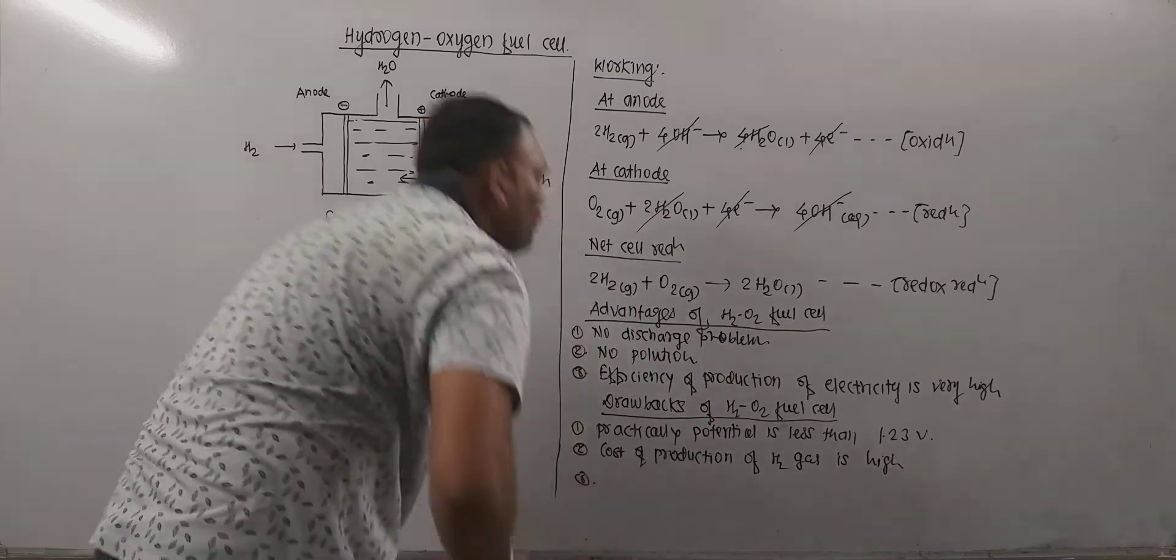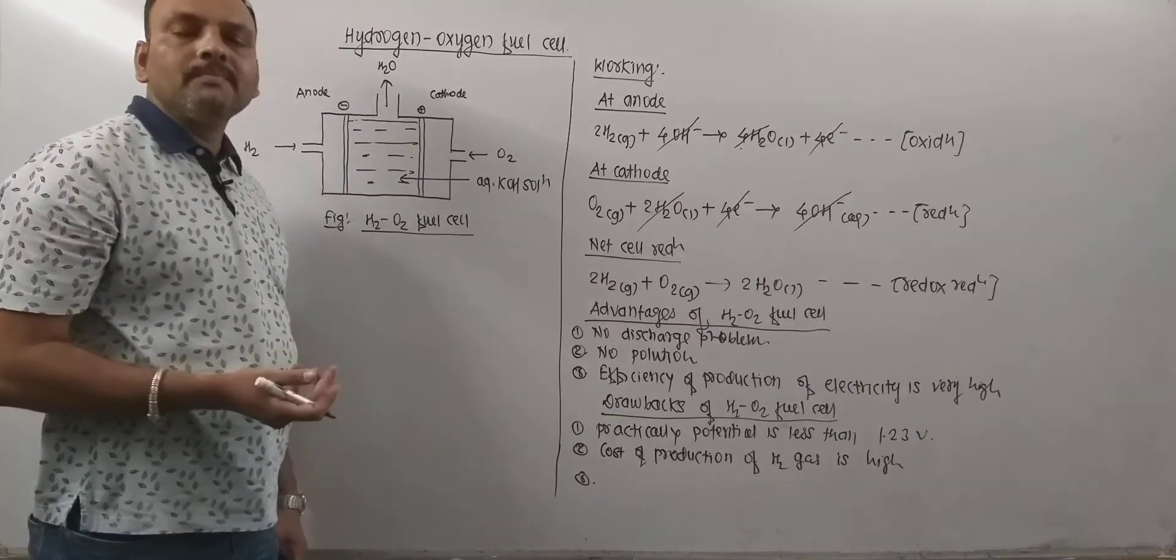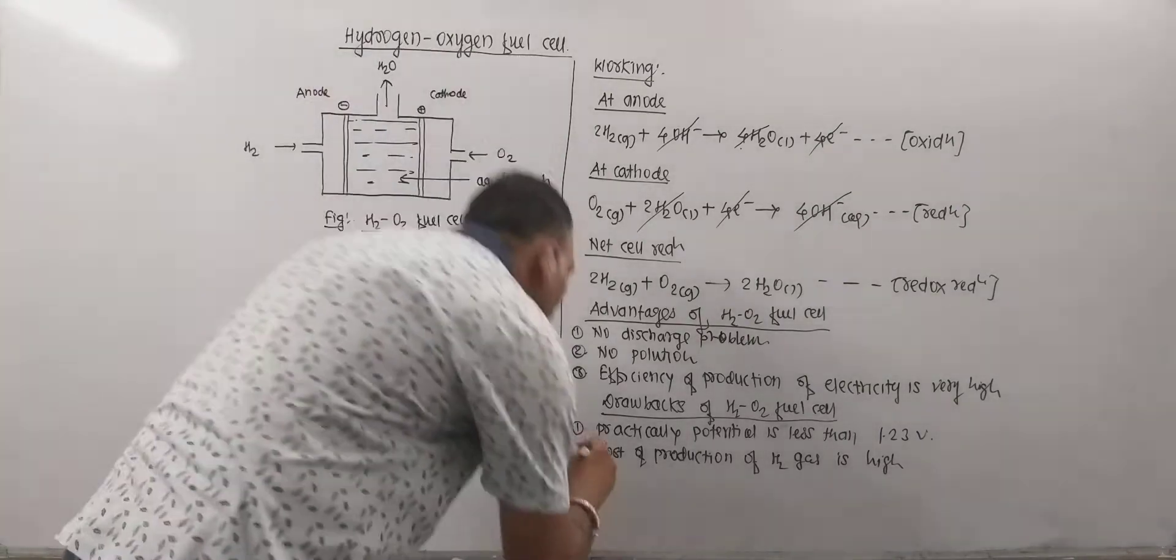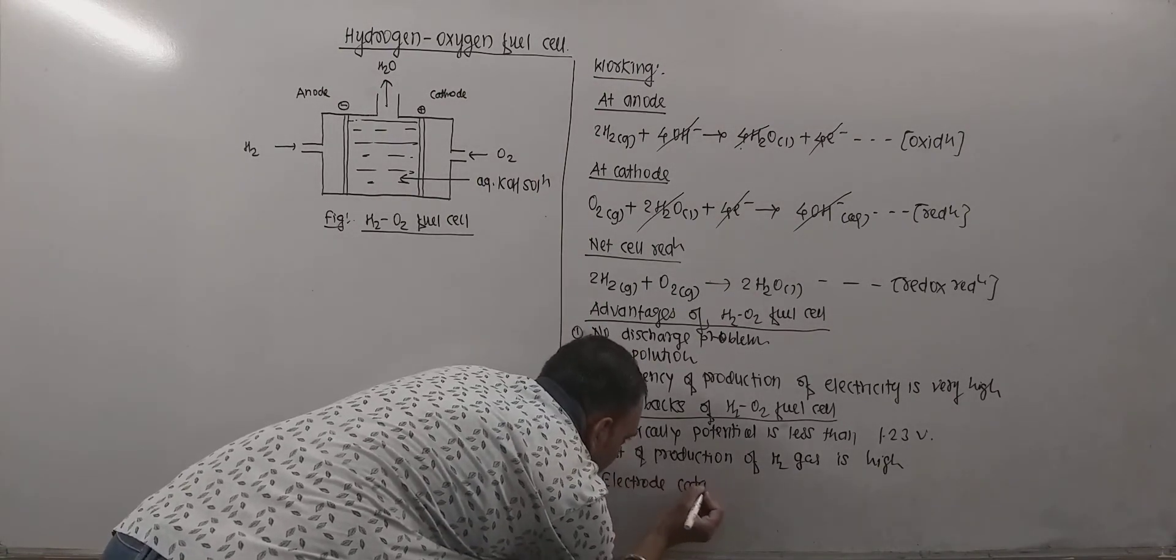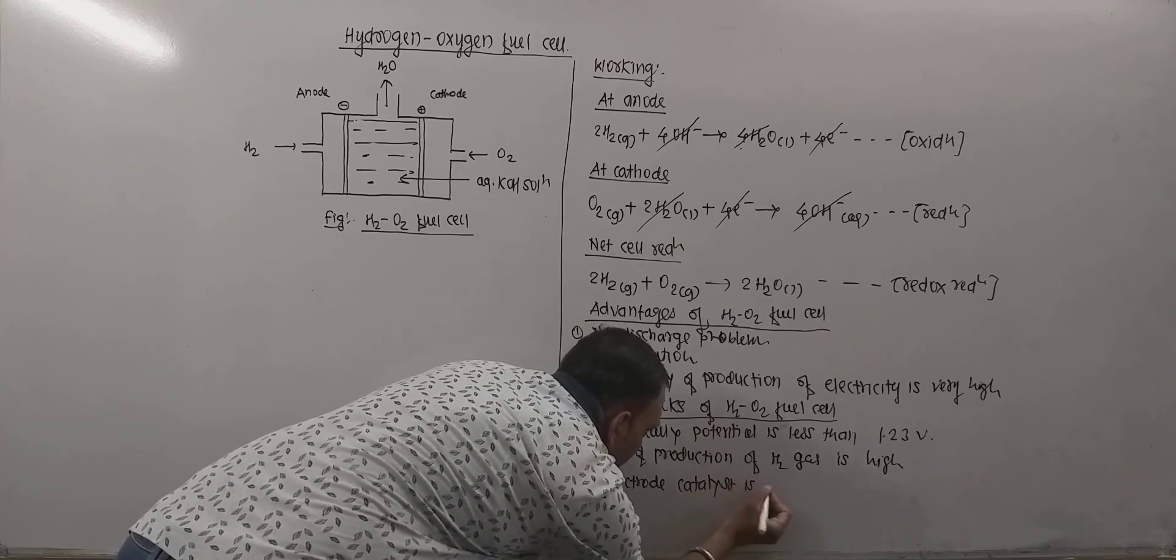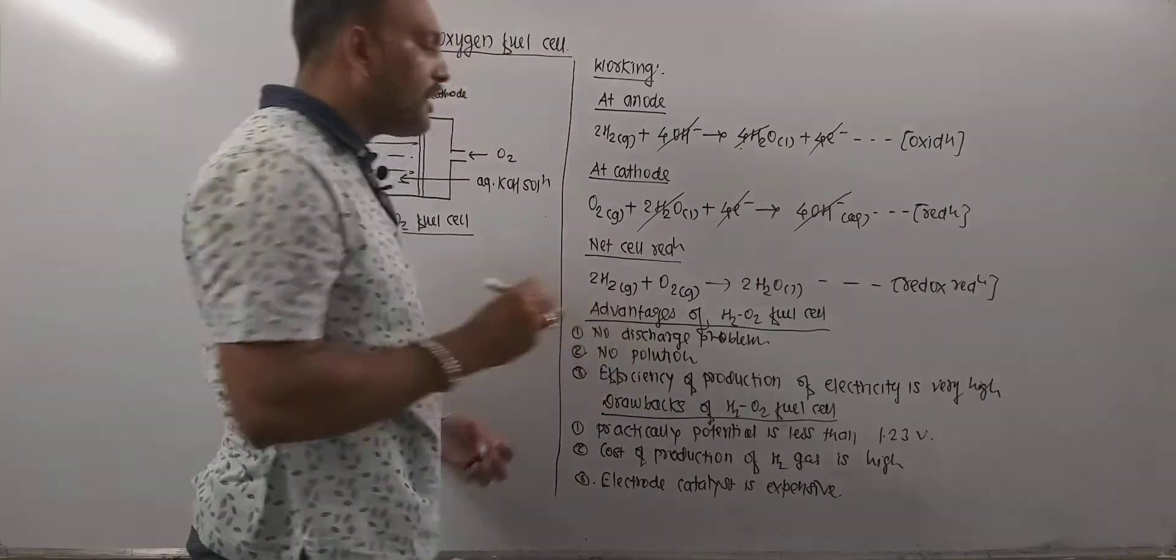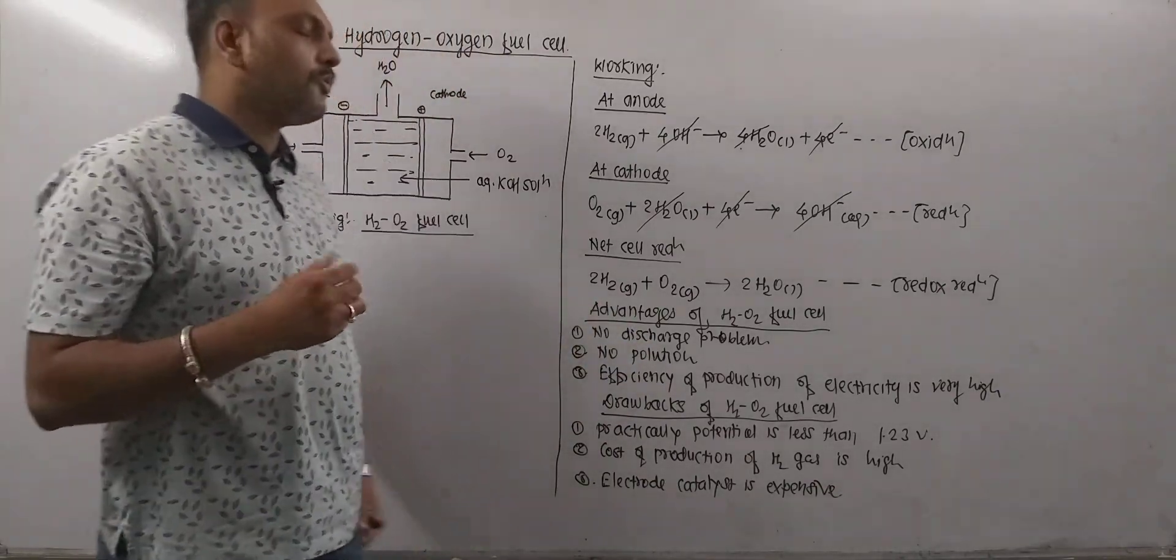And severe problem is electrode catalyst, that is platinum, is a precious metal and that is damn expensive. So electrode catalyst is expensive. So these are the problems using H2O2 fuel cell.